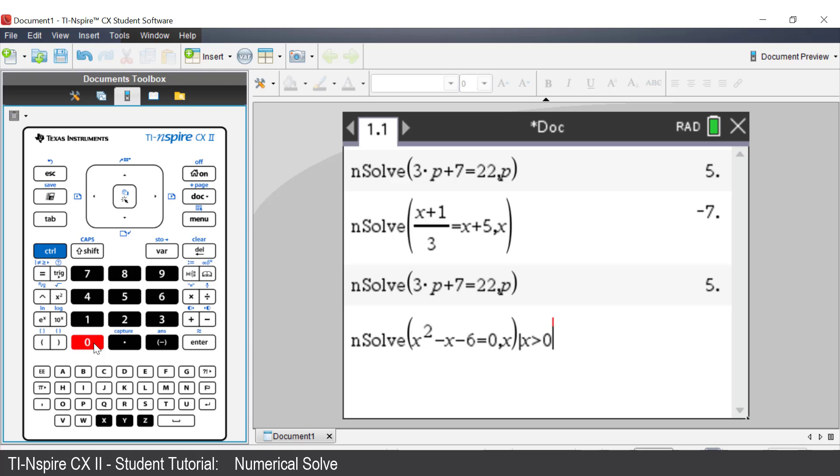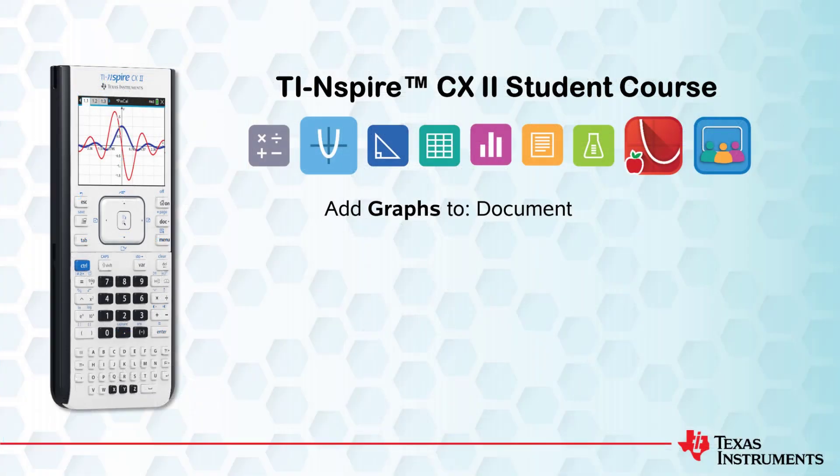Then 0. You are solving this quadratic for x given that x is greater than 0. Press Enter. X is equal to 3. Be sure to check out more of the videos in this series. Thank you for watching.